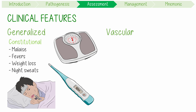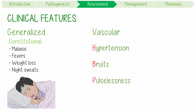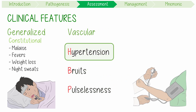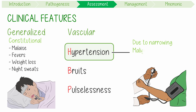Vascular features include the triad of high blood pressure manifestations. Hypertension occurs in most patients due to narrowing and decreased elasticity of the aorta and its branches, or the renal arteries. Severe malignant hypertension can occur. Notably, you might find discrepant blood pressure of greater than or equal to 10 mmHg between arms due to arterial stenosis.